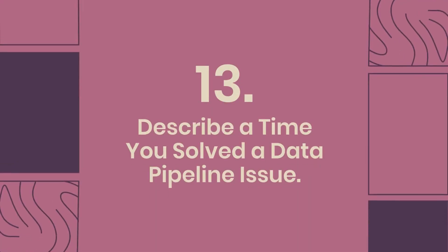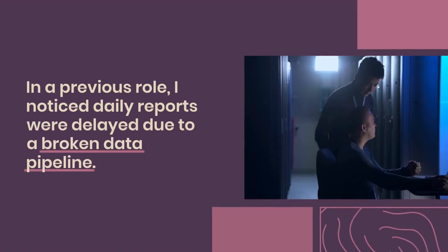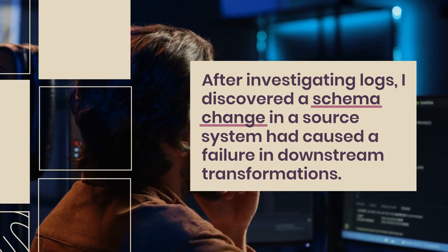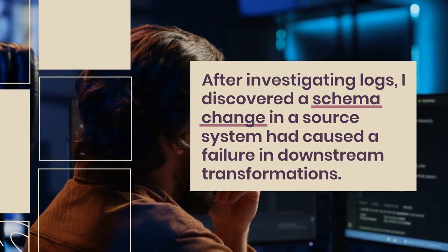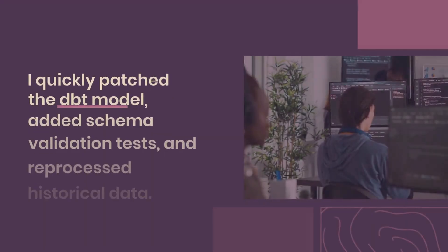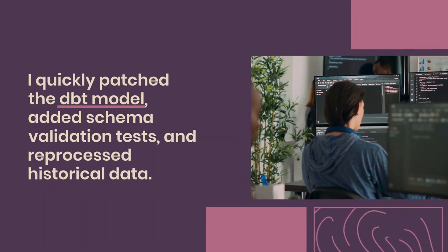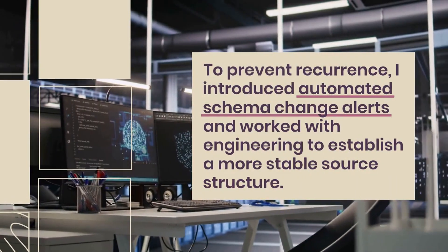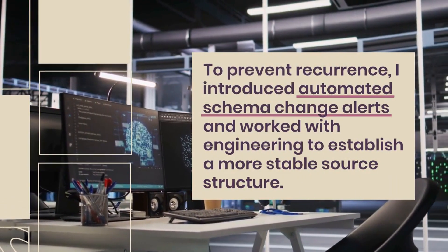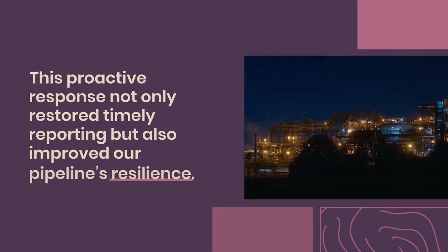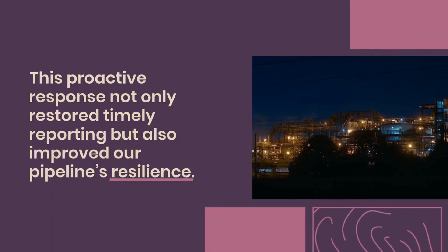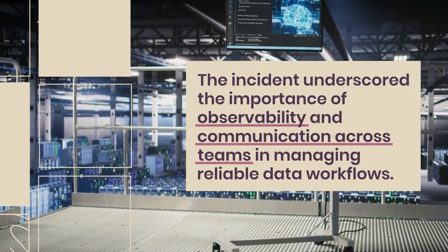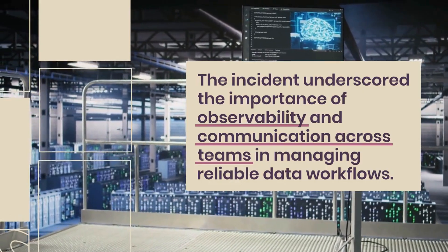Question 13: Describe a time you solved a data pipeline issue. In a previous role, I noticed daily reports were delayed due to a broken data pipeline. After investigating logs, I discovered a schema change in a source system had caused a failure in downstream transformations. I quickly patched the DBT model, added schema validation tests, and reprocessed historical data. To prevent recurrence, I introduced automated schema change alerts and worked with engineering to establish a more stable source structure. This proactive response not only restored timely reporting but also improved our pipeline's resilience. The incident underscored the importance of observability and communication across teams in managing reliable data workflows.